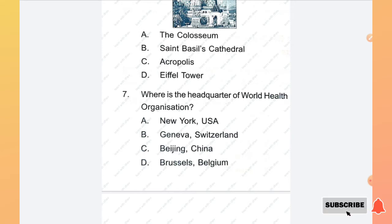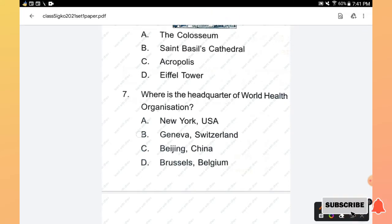Question number 7: Where is the headquarter of World Health Organization? New York USA, Geneva Switzerland, Beijing China, or Brussels Belgium. Right answer is option B, Geneva Switzerland.